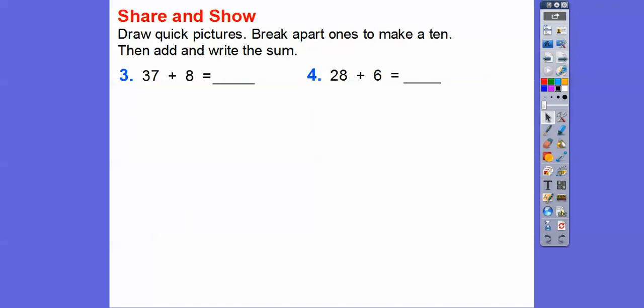How about these guys here? 37 plus 8. So here's 10, 20, 30, 35, 36, 37. And then 8 is going to be a 5 with 3 more right there.